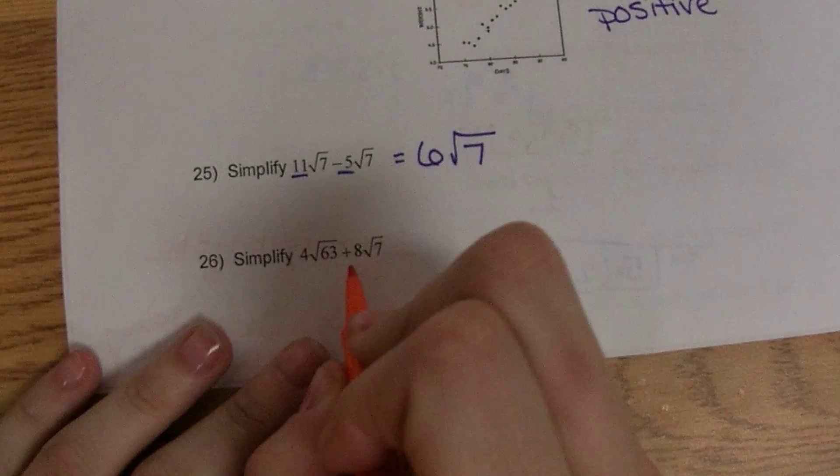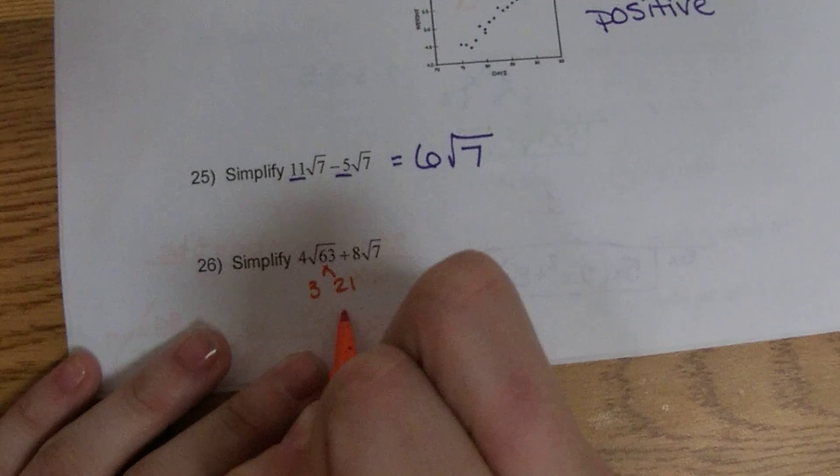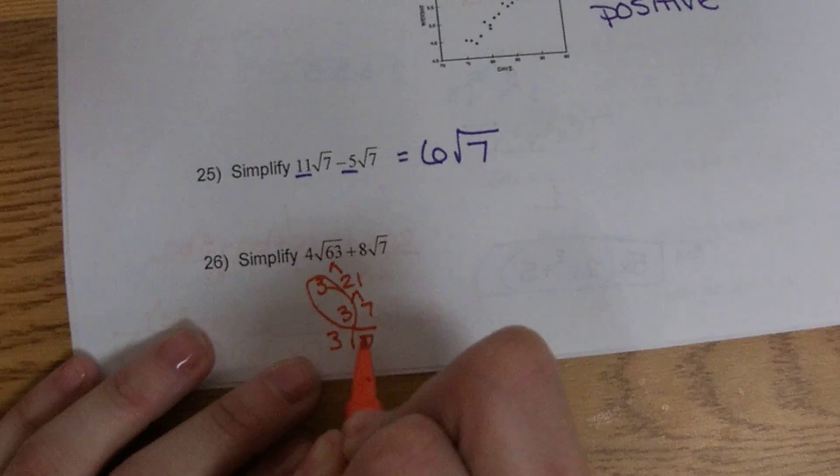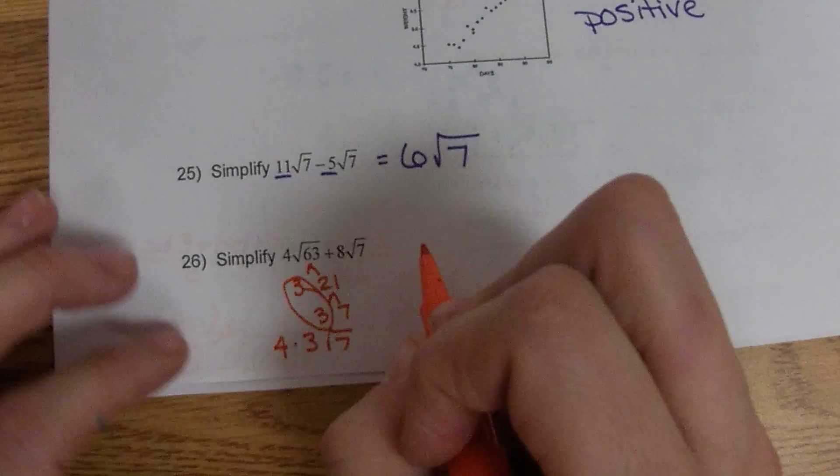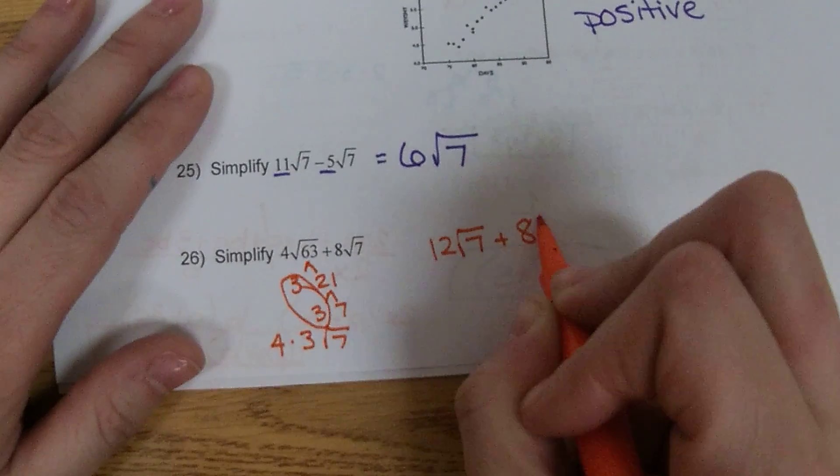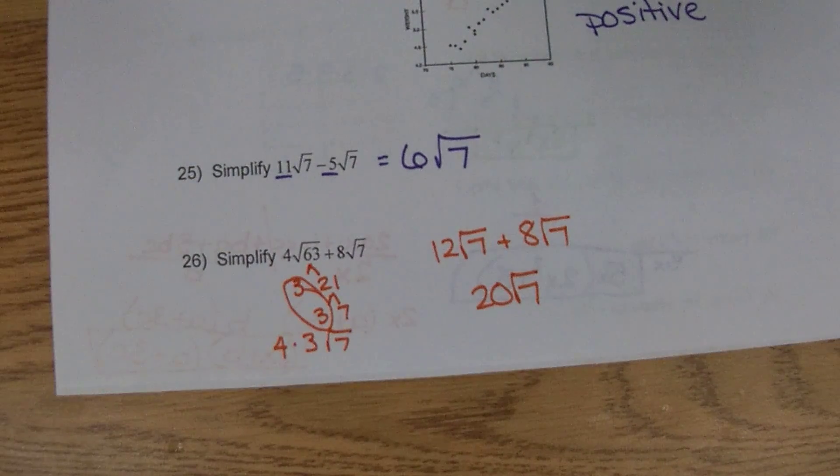26, the square roots do not match, so we need to simplify and see if we can get them to match. So this becomes 3 square root 7, but we already have the 4 out in front, so we'll have a 12 square root 7 plus an 8 square root 7, which will give us a 20 square root 7.